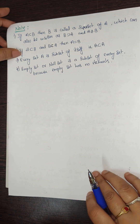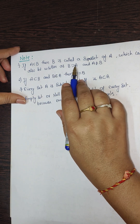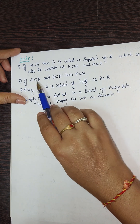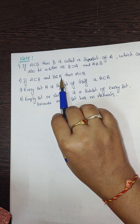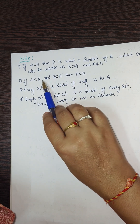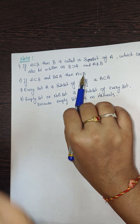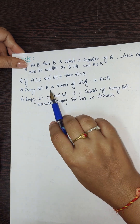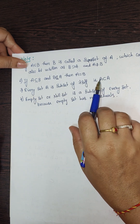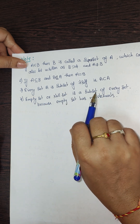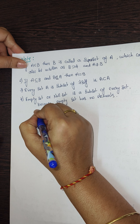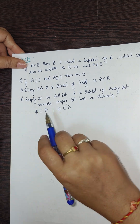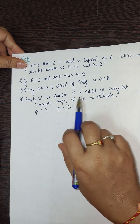The proper subset sign A ⊂ B means B is a superset of A and A ≠ B. Remember: if A ⊆ B and B ⊆ A, then A = B. Every set A is a subset of itself. The empty set (null set, φ) is a subset of every set — because the empty set has no elements, it is trivially contained in any set.